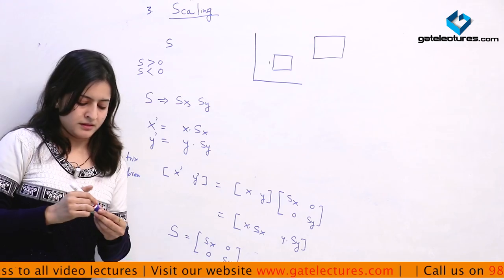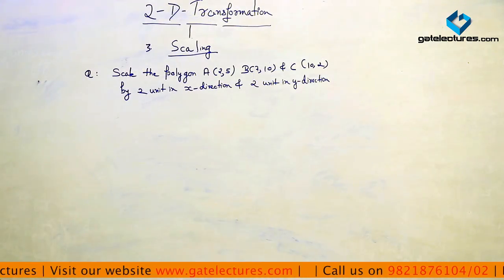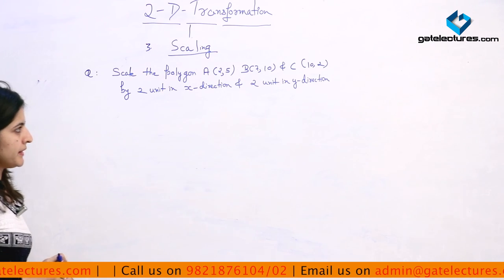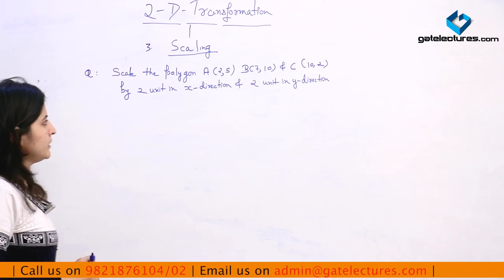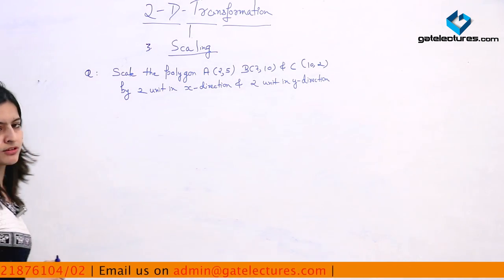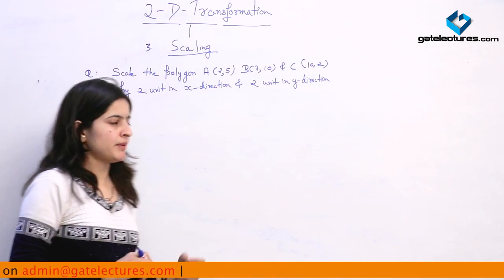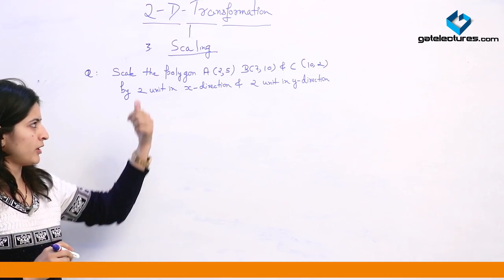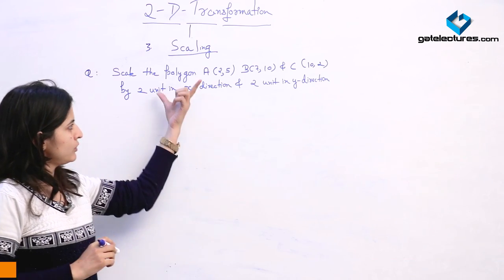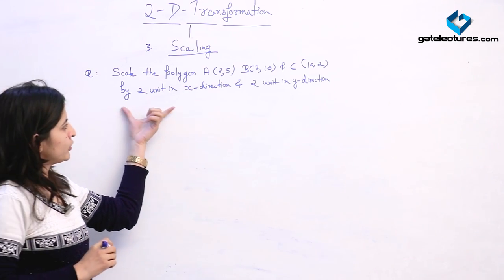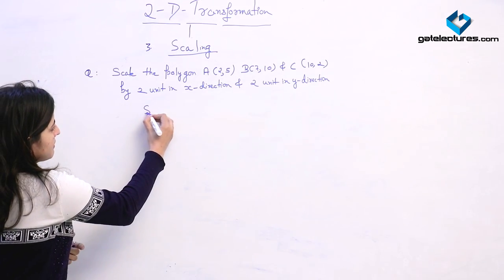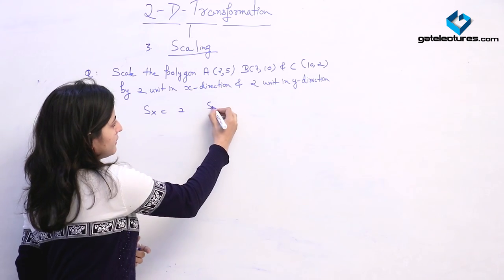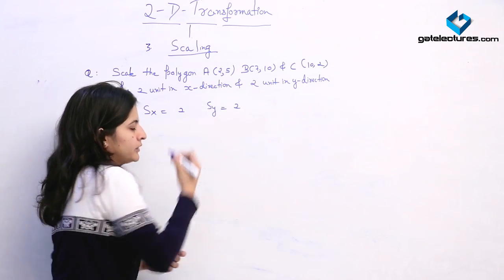Now we will see a numerical example. The question is: scale the polygon A(2,5), B(7,10), and C(10,2) by 2 units in the x direction and 2 units in the y direction. We are having a polygon with 3 coordinate points, so this polygon is a triangle. We have to scale this triangle by 2 units, meaning the value of sx is 2 and the value of sy is also 2.